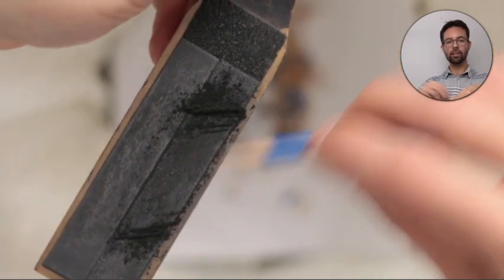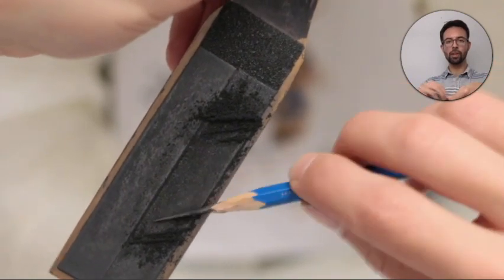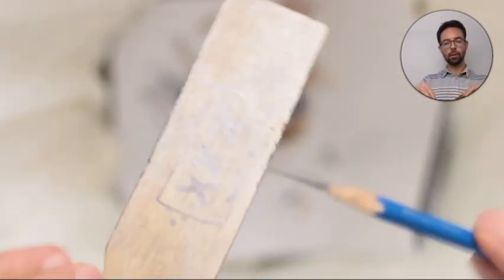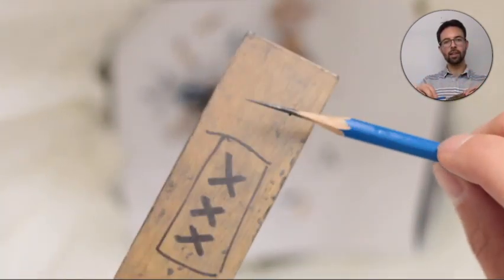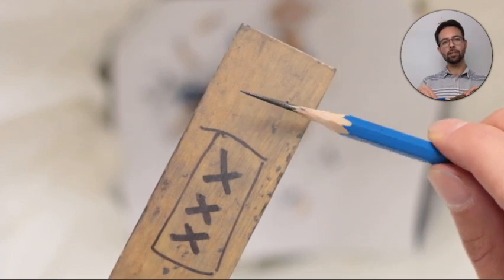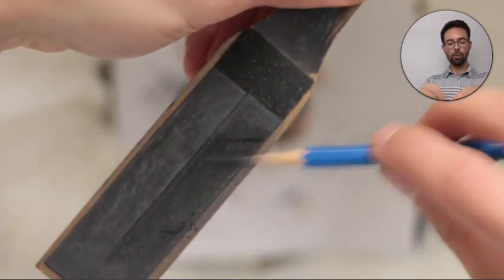And I can already hear that it's a higher pitch sound, which means my point is getting sharper. And we can check by holding it up against a light surface. And it's decent. It's a bit sharp, it has some facets. So I'm going to go a bit more and turn more frequently.